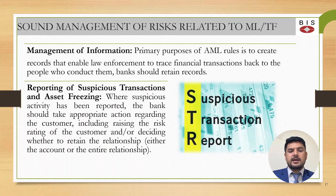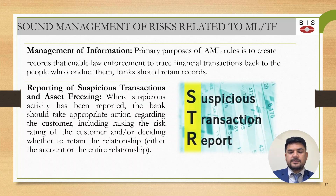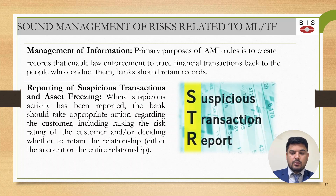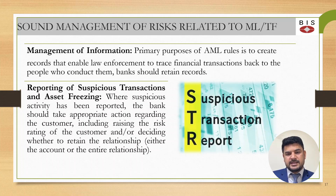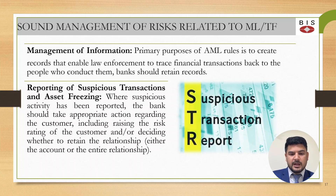On management of information, the primary purpose of AML rules is to create records and enable law enforcement to trace financial transactions back to the people who conducted them. If there is a strong MIS management system, and something suspicious happens — even after some time following a transaction — you can trace it out. Therefore, a strong management information system is essential.